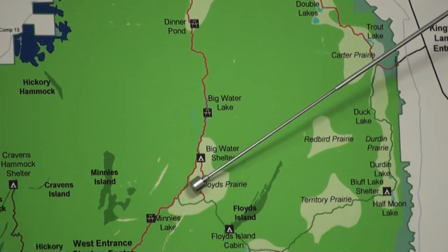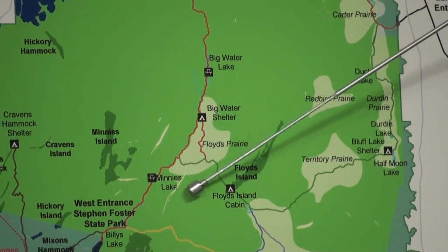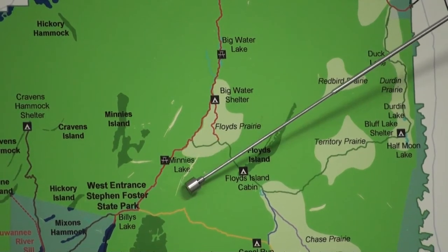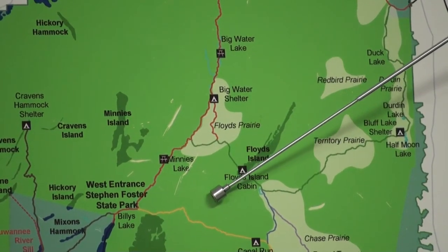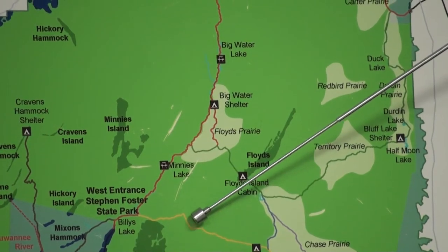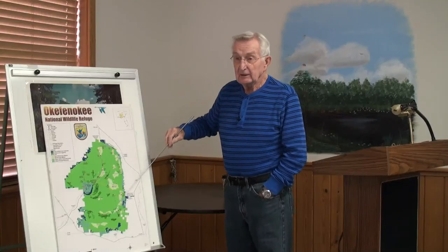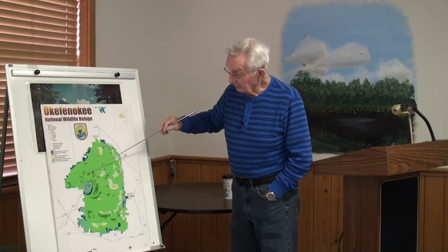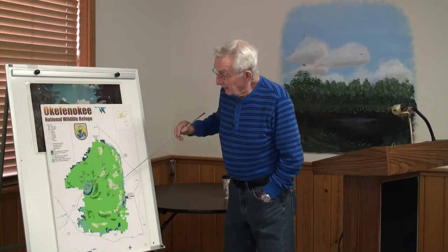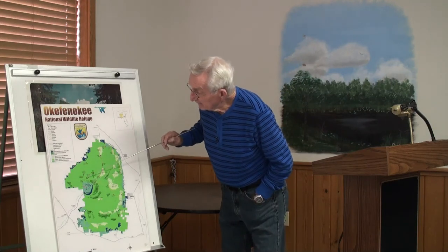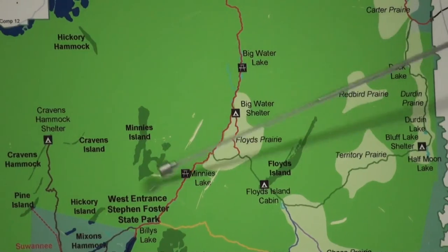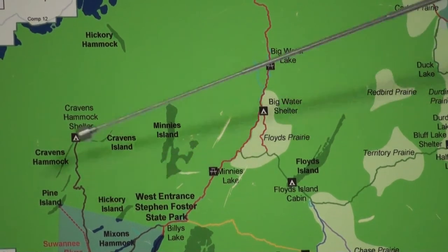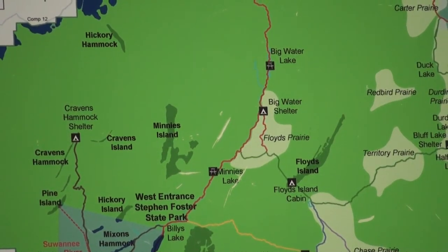Then you take the trail down to Minnie's Lake and Minnie's Shelter — it's not an overnight stop, it is a stop-and-rest site. There are restrooms at all of these campsites and most of the stopovers. Craven's Hammock is down at the end of Billy's Lake and it is very secluded — lots of mosquitoes and ticks there.